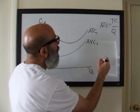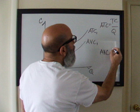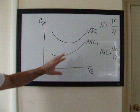Average variable cost is going to be the total variable cost divided by the quantity. So these look pretty good. You've got your equations there.